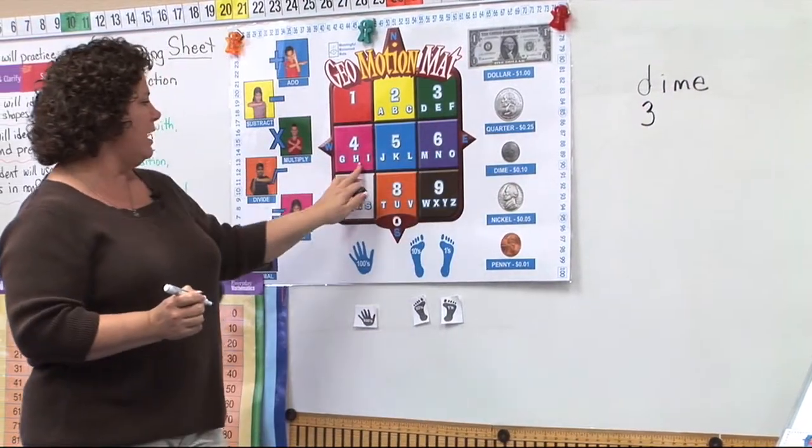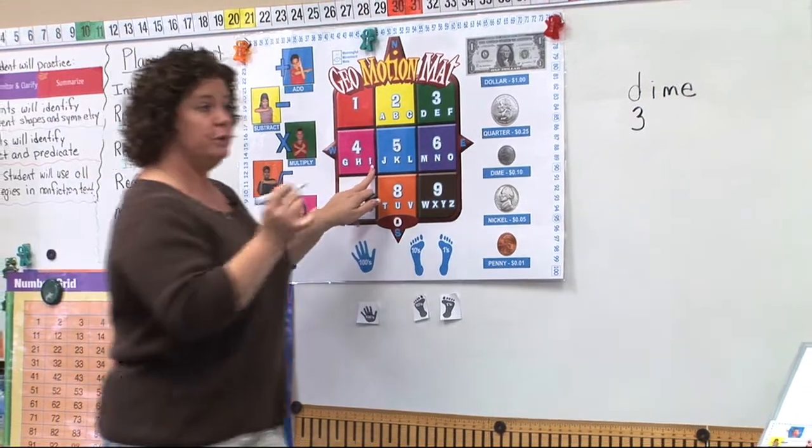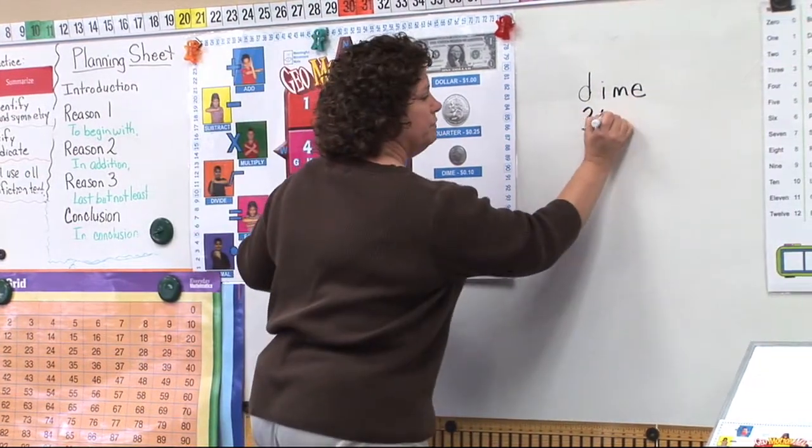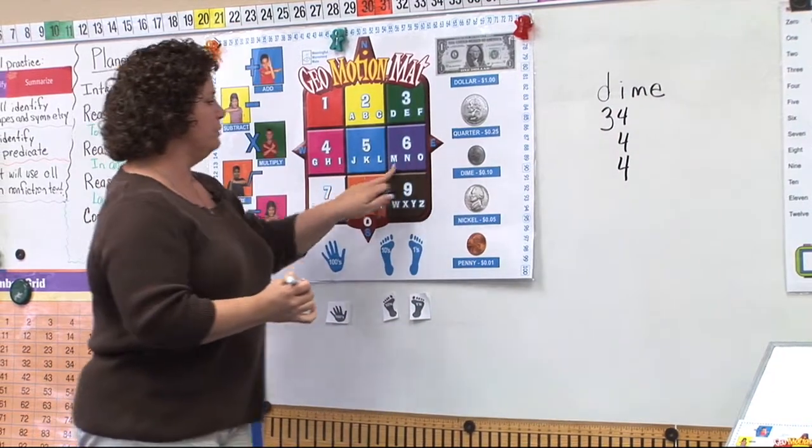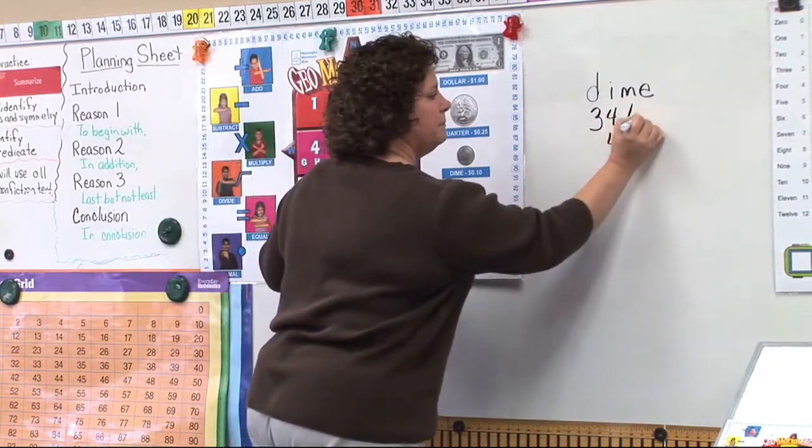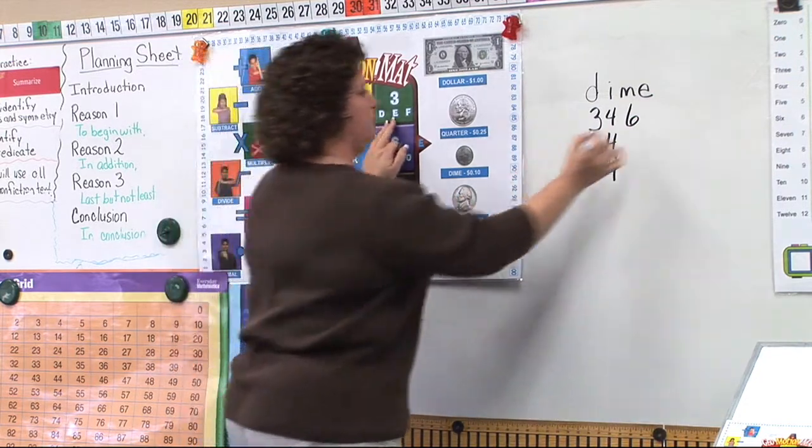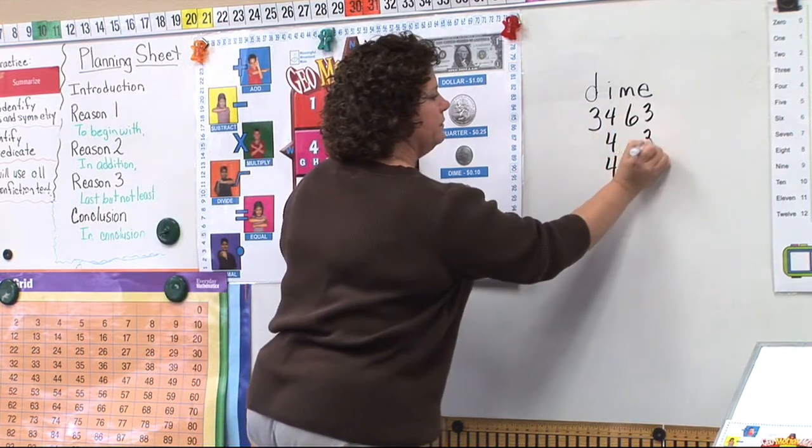Well then the letter I is four, but it's the third letter. So you would hit that three times. So it would be four, four, four. Then the M would be the first six number. And then the E again would be the second one. Three, three.